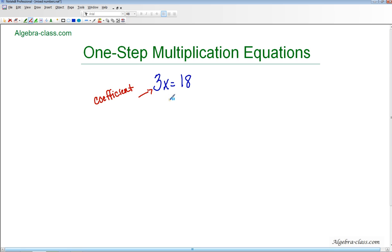So that's why this is considered a multiplication equation. But our goal is still to get x by itself. That means that we need to get rid of the coefficient 3. So because we're multiplying, we're still going to use opposite operations.